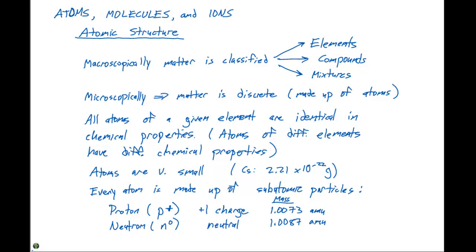And the third subatomic particle is the electron. We will abbreviate the electron as a lowercase e with a negative subscript. It has a minus 1 charge. Its mass in atomic mass units is 5.486 times 10 to the minus 4 AMU.